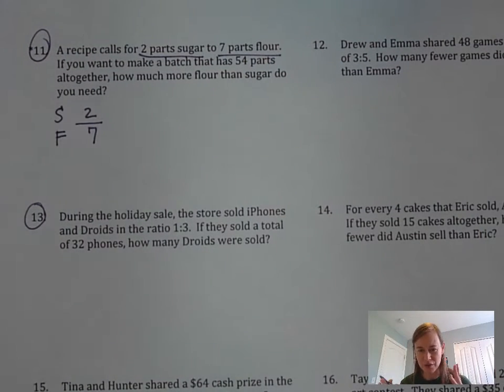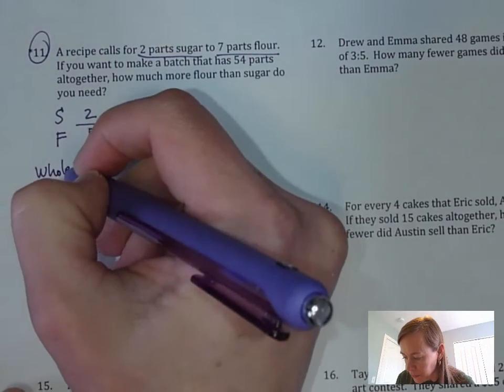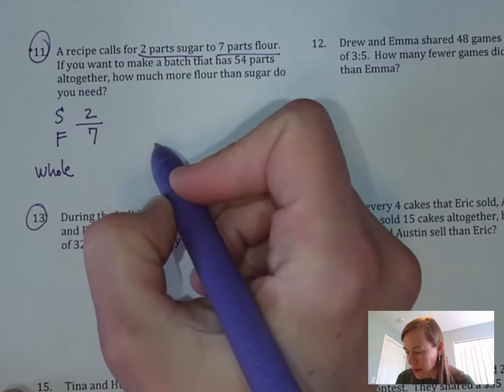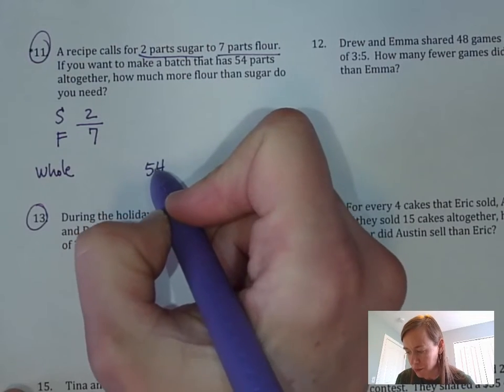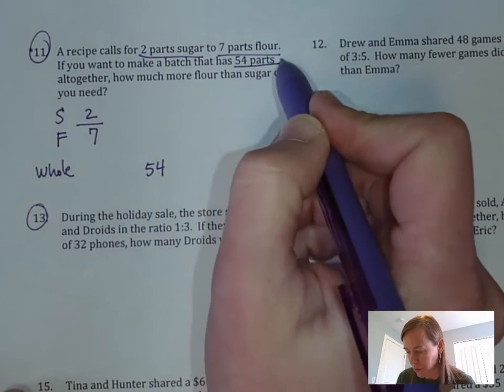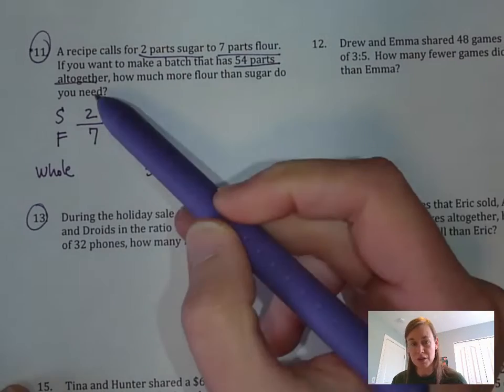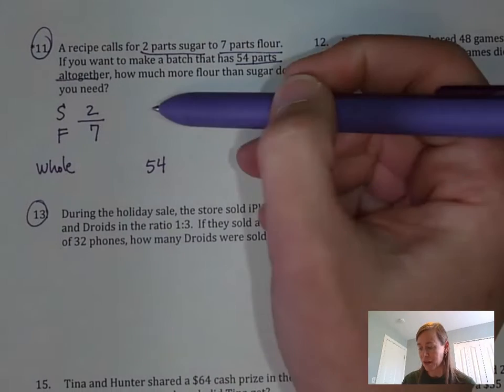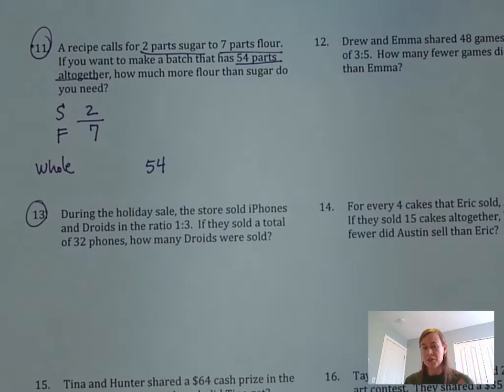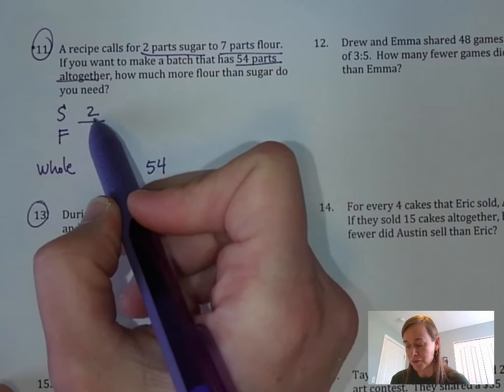It says if you want to make a batch that has 54 parts altogether, so we're talking totals here, right, the whole. Let's write another thing down here for the whole. You're trying to find the batch that has 54 in the whole. How much more flour than sugar do you need? Before we can figure out how much more flour than sugar we need, we need to figure out these parts here.